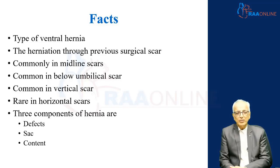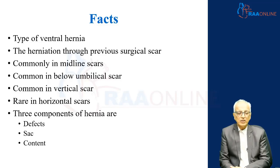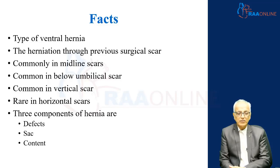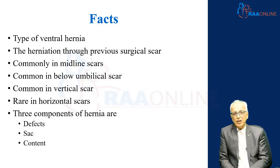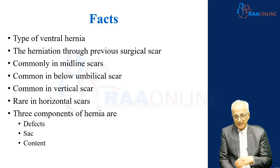Commonly, it happens in the midline scar, common in the scar below the umbilicus, definitely common in vertical scars and rare through horizontal scars. The three most important components of incisional hernia are the defect, the sac, and the contents.